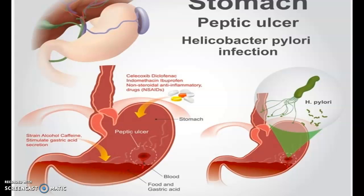Another cause of ulcers is NSAIDs — COX inhibitors like celecoxib, diclofenac, and ibuprofen. Some people say they can't take too much ibuprofen because it irritates their stomach. That's because NSAIDs block prostaglandins that cause pain, but they also block prostaglandins that play an integral role in providing the mucosal layer barrier in the stomach.